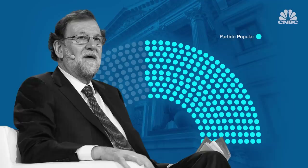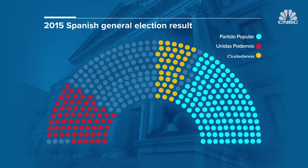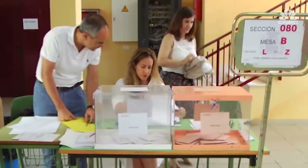The two new political forces, Podemos and Ciudadanos, won more than 100 seats between them, creating the most fragmented parliament in almost four decades. Inter-party negotiations to form a government broke down, and so just six months after that election, Spaniards returned to the polling stations to vote again.